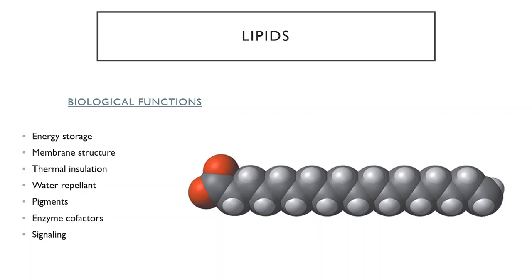Lipids have other functions depending on the organism. In animals that regulate their own body heat, including mammals, fat or lipid molecules form fat, which is important for controlling temperature because it acts as an insulator of heat. Lipids or molecules derived from lipids can also act as water repellents — a lot of skin oils that organisms use to keep water out of their skin are made from lipids. Various pigments that some animals and plants use to have bright colors are also derived from lipids.